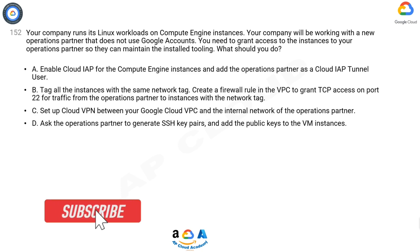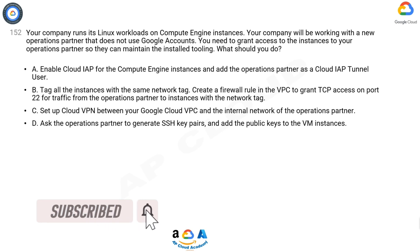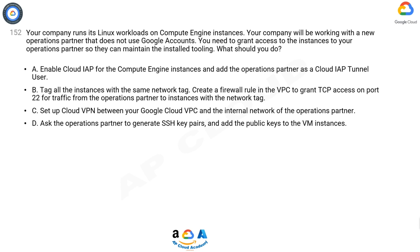A: Enable Cloud IAP for the Compute Engine instances and add the operations partner as a Cloud IAP tunnel user. B: Tag all the instances with the same network tag, create a firewall rule in the VPC to grant TCP access on port 22 for traffic from the operations partner to instances with the network tag. C: Set up Cloud VPN between your Google Cloud VPC and the internal network of the operations partner.